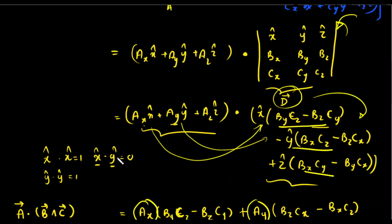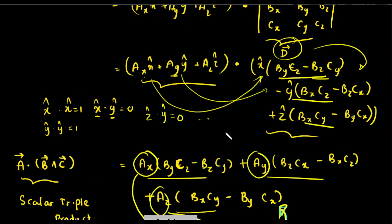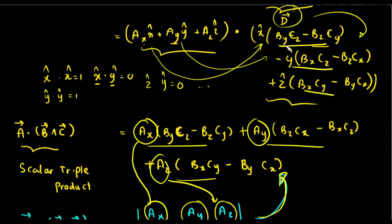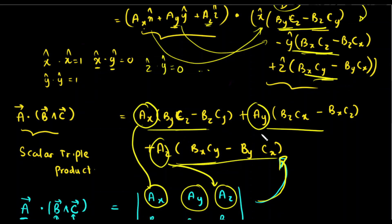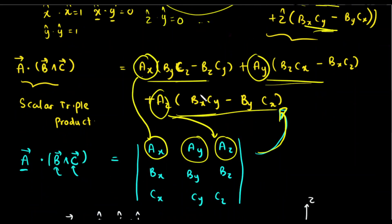Similarly, z-hat dot z-hat equals 1. From the previous video, x-hat dot y-hat equals 0 — when you have the scalar product of different unit vectors, you get 0. So after expanding, only the terms with matching unit vectors remain: AX times one term, AY times another term, and AZ times another term.